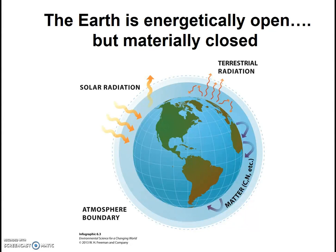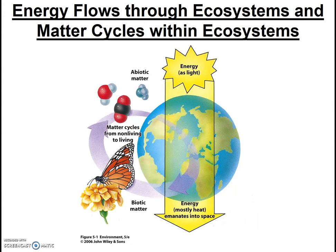Energy comes in from the sun and leaves as heat, but matter does not enter or leave the Earth system. Solar energy is the primary energy source for the Earth system; the only other energy source is geothermal heat from within the Earth. The flow of energy from the sun enters the Earth system and is passed from organism to organism, starting with plants and other photosynthesizing organisms, along the food chain. At each step along the food chain, some useful energy is lost as heat, until eventually all the useful energy is used up. Indeed, energy flows through an ecosystem — it is not cycled. Thus the Earth and Biosphere 2 need a constant energy source.